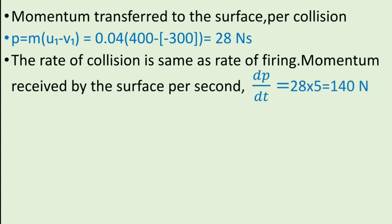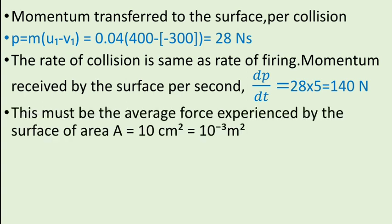The rate of collision is same as rate of firing. Momentum received by the surface per second is given by dp divided by dt which is equal to 28 into 5 which is equal to 140 newton. This must be the average force experienced by the surface. Area A is equal to 10 square centimeter which is equal to 10 raised to minus 3 square meter.